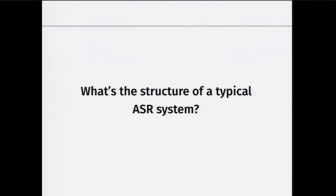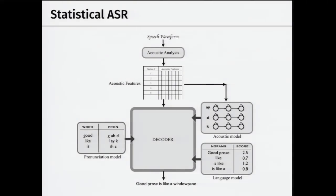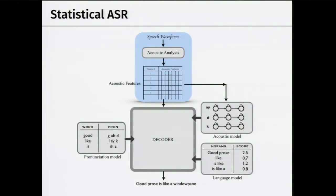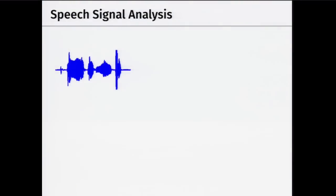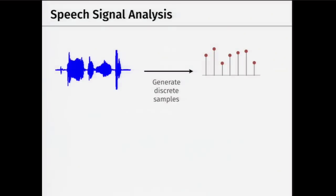Now let's look at the structure of a typical ASR system. The pipeline includes an acoustic analysis component that sees the speech waveform and converts it into some discrete representation or features. Those features are then fed into what's known as the acoustic model. The very first component looks at the raw speech waveform and converts it into a representation that algorithms can use.